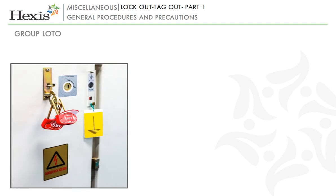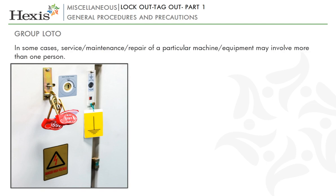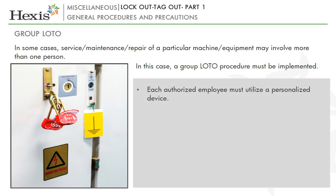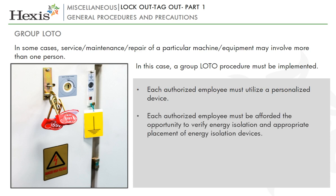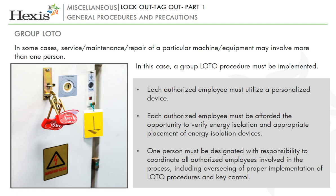Let us now see how to handle the situation if there is a group LOTO. In some cases, service, maintenance or repair of a particular machine or equipment may involve more than one person. In this case, a group LOTO procedure must be implemented. The process is similar to that described previously, but with a few nuances to account for the involvement of more than one person. Each authorized employee must utilize a personalized device. Each authorized employee must be afforded the opportunity to verify energy isolation and appropriate placement of energy isolation devices. One person must be designated with responsibility to coordinate all authorized employees involved in the process, including overseeing proper implementation of LOTO procedures and key control.